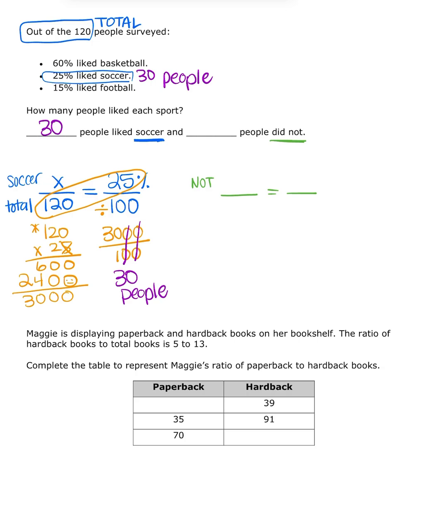All right. Then we have how many people did not. Well, in order to find how many people did not, I have to take basketball, because they didn't like soccer, and football, and they didn't like soccer, and I'm going to put them together. So I'm going to take 60% for basketball, and I'm going to take 15% for football. And I'm going to put them together. And that equals 75%.